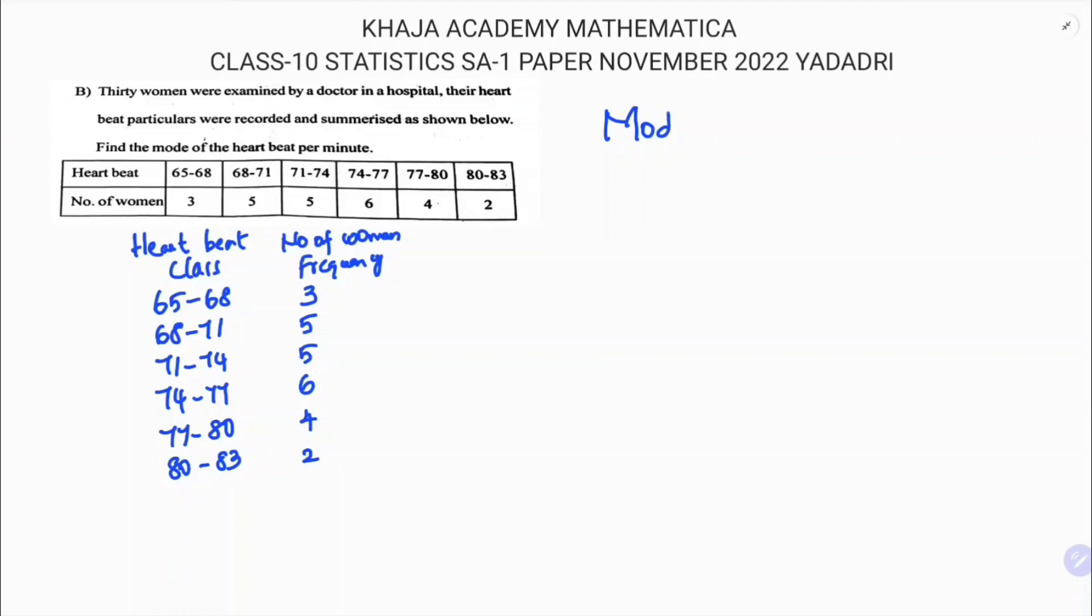To calculate mode, the formula is l plus (f1 minus f0) by (2f1 minus f0 minus f2) times h. First we need to select the modal class by finding the highest frequency. The highest frequency is 6, so this is the modal class.